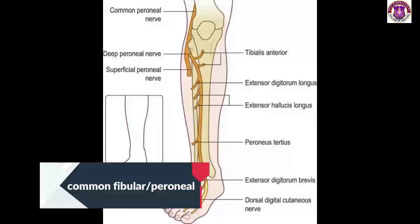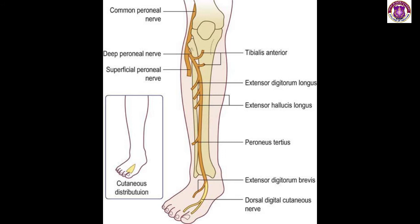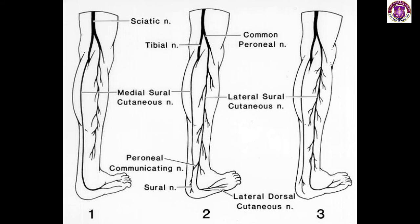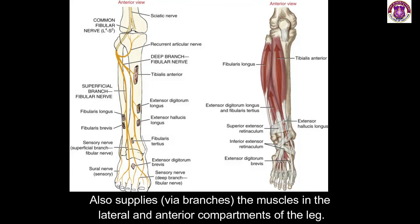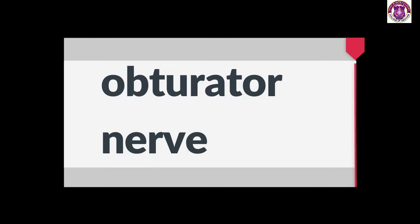The smaller terminal branch of the sciatic nerve, the common fibular nerve (also called the common peroneal nerve), arises in the lower third of the thigh. It runs downward through the popliteal fossa, closely following the medial border of the biceps femoris muscle, then divides into the superficial fibular nerve and the deep fibular nerve. Its cutaneous branches include the sural communicating branch, which joins the sural nerve from the tibial nerve, and the lateral cutaneous nerve of the calf, which supplies the skin on the lateral side of the back of the leg. Its muscular branch goes to the short head of the biceps femoris, arising high up in the popliteal fossa, and it also has articular branches to the knee joint.